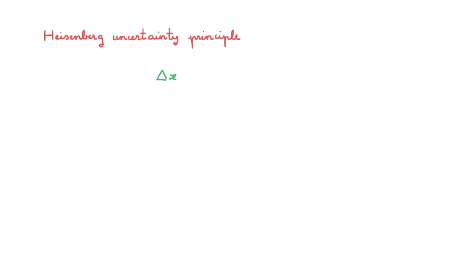Let's start by stating the Heisenberg uncertainty principle. Many of you will have encountered it stated as delta x times delta p larger than or equal to one-half times h-bar. In this expression, delta x and delta p are the root mean square deviations of these two observables, and we typically call them the uncertainty in x and the uncertainty in p. The expression tells us that the product of these two uncertainties has a non-zero lower bound of h-bar over 2.